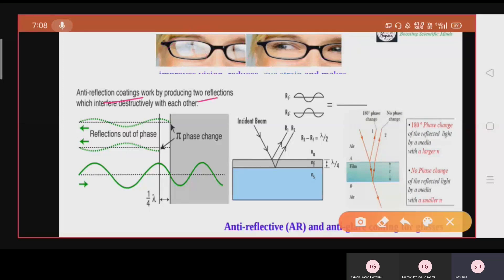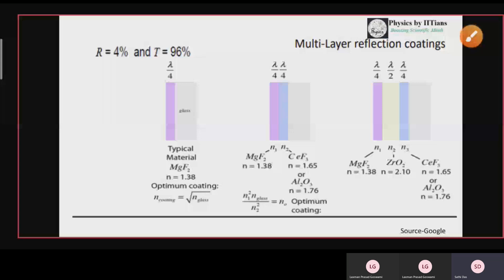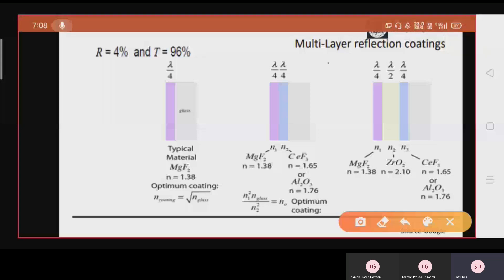The anti-reflection coatings work by producing two reflections which interfere destructively with each other. This is our incident light. This light is getting a pi phase difference here and both reflected light having a phase difference of pi interfere destructively and we are getting no reflected light. The anti-reflection coating may be of single layer coating, may be multiple layer coating or maybe more than two. This lambda by four means a path difference of lambda by four, which induces a phase difference of pi.